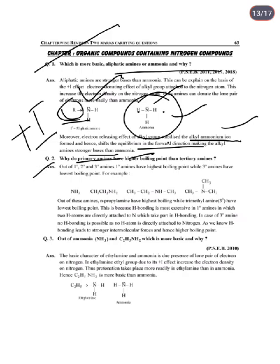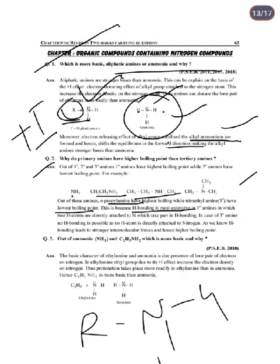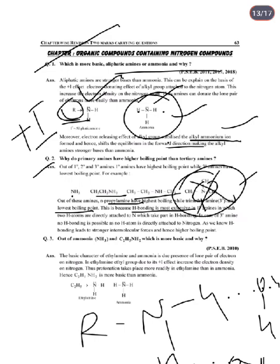Next: Why do primary amines have higher boiling points than tertiary amines? Primary amines (e.g., n-propylamine) have the highest boiling point while tertiary amines have the lowest. This is because hydrogen bonding is most extensive in primary amines — two hydrogen atoms are directly attached to nitrogen and participate in hydrogen bonding. In tertiary amines, no hydrogen is directly attached to nitrogen, so hydrogen bonding is not possible. Greater hydrogen bonding leads to stronger intermolecular forces and hence higher boiling points.